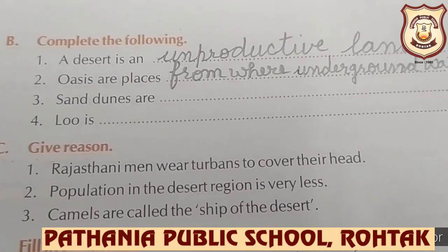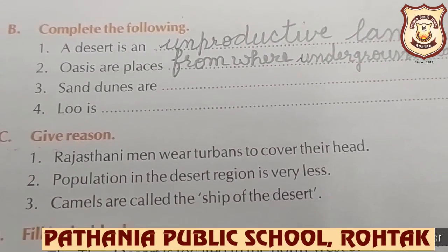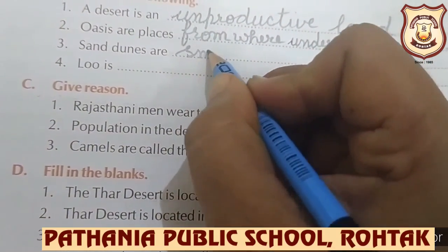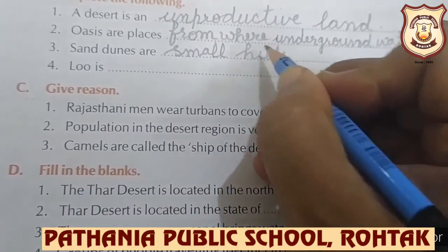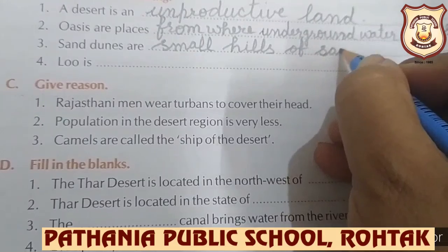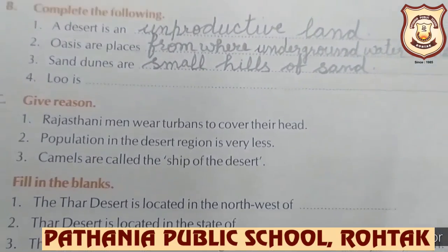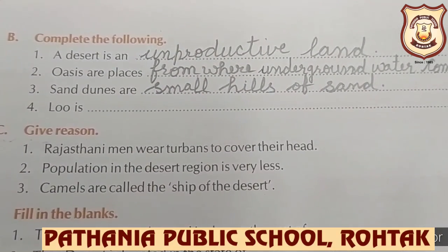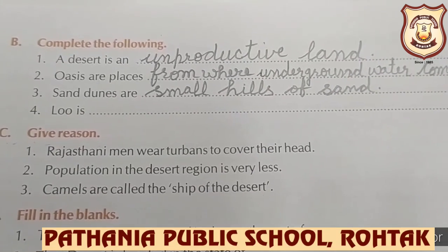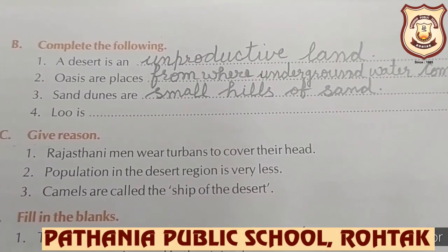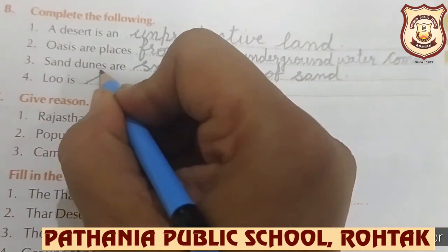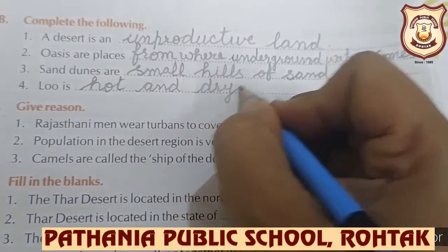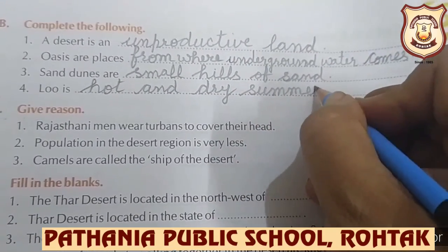Number three: sand dunes are small hills of sand — write 'small hills of sand.' Number four: loo — have you ever heard this word? Loo is a hot and dry summer wind — write 'hot and dry summer wind.'